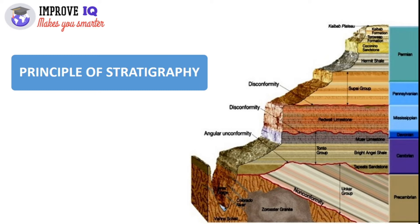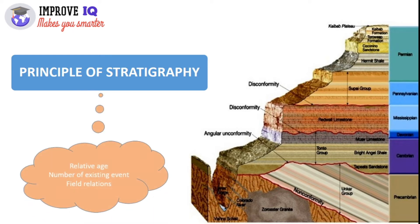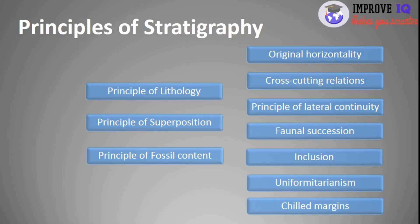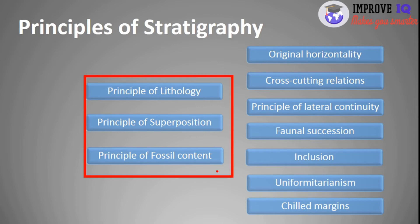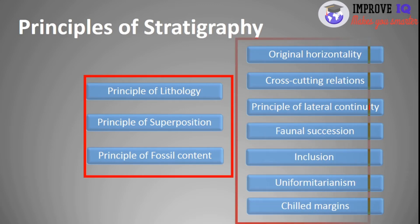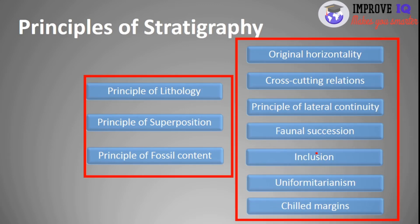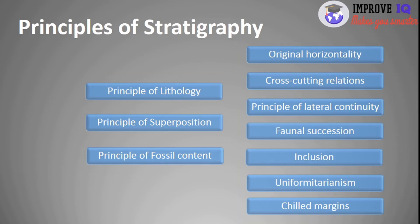Now I will discuss the principles of stratigraphy. The principles are like geological tools that help determine the relative age, number of existing events, and field relations estimated from one or many outcrops. The three major principles are: principle of lithology, principle of superposition, and principle of fossil content. Additional principles include original horizontality, cross-cutting relations, lateral continuity, faunal succession, inclusion, uniformitarianism, and chilled margins.